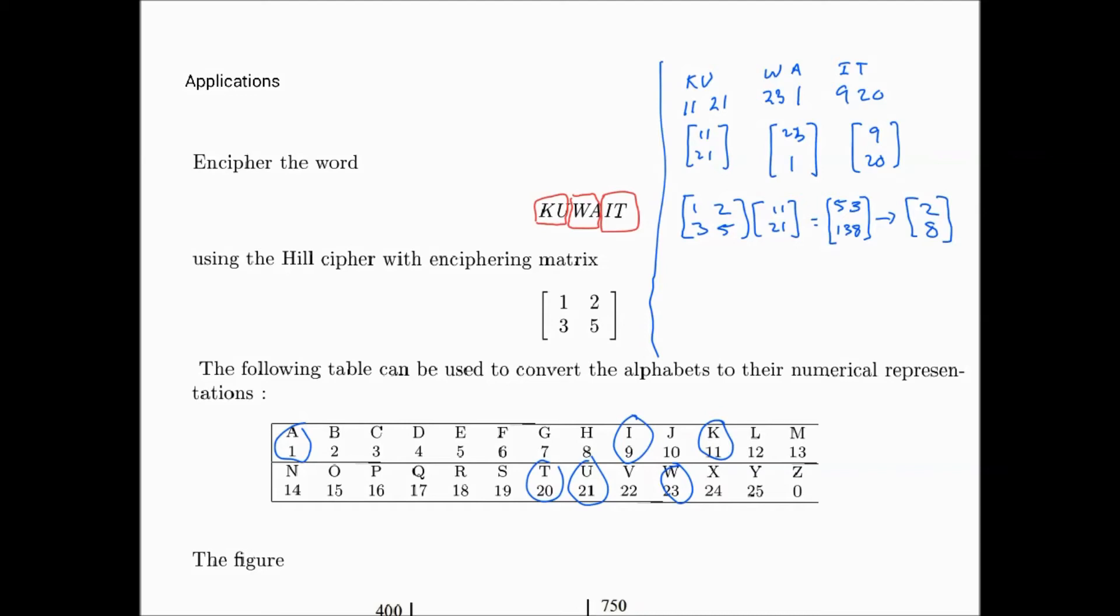Similarly, we'll take [1 2; 3 5] and multiply by the next two numbers. That's going to give me 23 plus 2, which is 25. This one will be 69 plus 5, so 74. According to the mod, this will remain as 25. The 74, 26 by 2 is 52, minus 74 that gives us 22, so this is going to be 22.